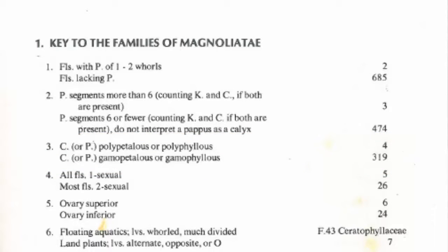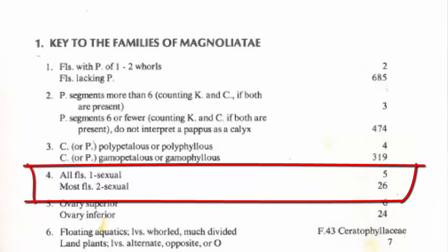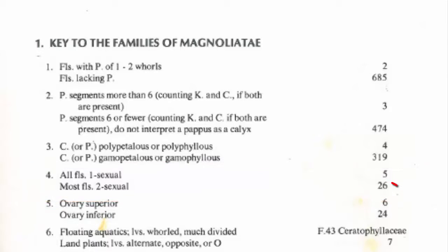Step four asks: all flowers unisexual — meaning they had either male or female — or most flowers bisexual. We saw most because we dissected two flowers and both had male and female. So at number four we had male plus female, and as a result we go to step 26.